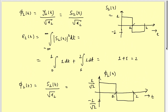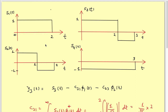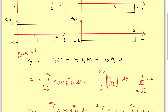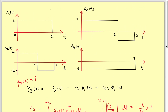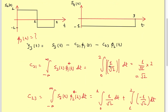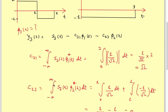Now we find phi_3(t). We need c31 = integral of s3(t) times phi_1(t) dt. phi_1(t) = 1/sqrt(2) from 0 to 2, and s3(t) = 1 from 0 to 2, so c31 = 1/sqrt(2) times 2 = sqrt(2). For c32 = integral of s3(t) times phi_2(t) dt: phi_2(t) is 1/sqrt(2) from 0 to 1 and minus 1/sqrt(2) from 1 to 2, so c32 = 0.